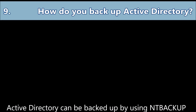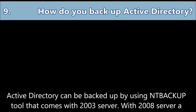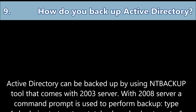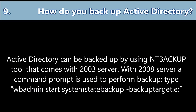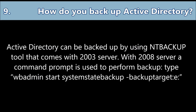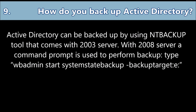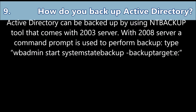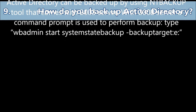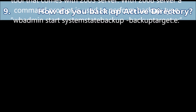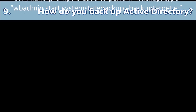Question number nine: How do you backup Active Directory? Active Directory can be backed up by using the nt-backup tool that comes with 2003 server. With 2008 server, a command prompt is used to perform backup. Type: wbadmin start systemstate backup -backuptarget:e: